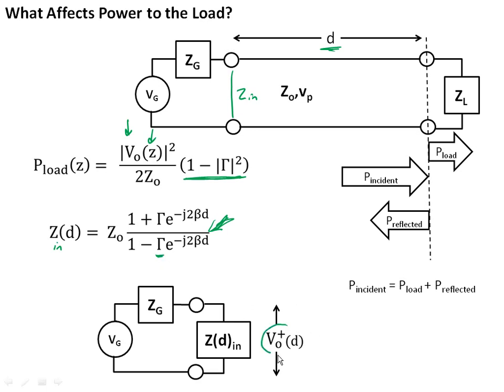But remember that this term, v naught, is a function of d, because the input impedance is a function of d, and this is just your voltage divider. So basically, v naught plus is going to be equal to the voltage on the generator, as we've seen before, over z in, which I'm calling z sub d here, over z in plus the impedance of the generator. And so you have to actually take both of these things into account when you're calculating the power delivered to the load. And it turns out that this second term is actually much more important than the reflection coefficient, when you do most calculations.